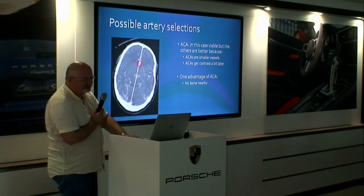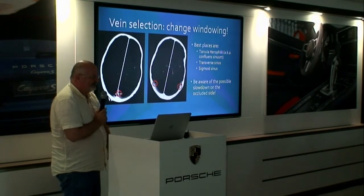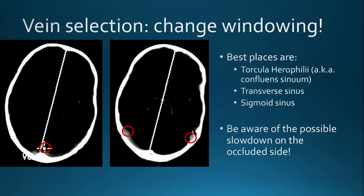It's not wrong to pick the ACA, but I can show you what the difference is. The veins are okay to use — either the torcular herophili or the transverse sinuses or the sigmoid sinuses; there are plenty of sinuses to pick. Just don't forget: if the patient has slow blood flow on one side due to a right MCA occlusion, the veins will also be slower on that side — so pick the other side if possible.